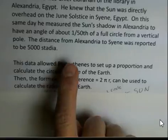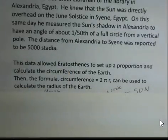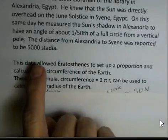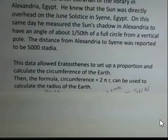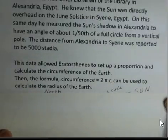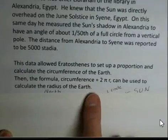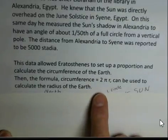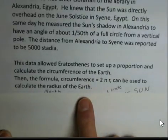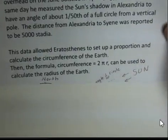So Eratosthenes had this data of 1/50th of a circle for the shadow, and he has an estimate of the distance between Alexandria and Syene of 5,000 stadia. We'll talk more about that later. So he set up a proportion and calculated the circumference of the Earth, and then the formula circumference equals 2πr can be used to calculate the radius of the Earth.